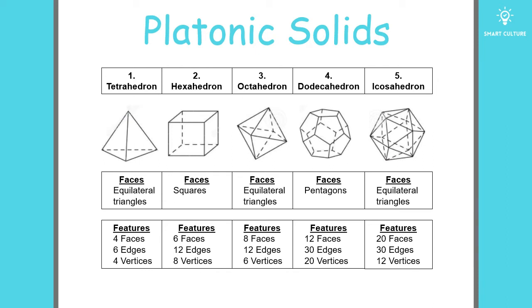Now let's take a look at this table. First, we'll look at a tetrahedron. As you can see, the faces are all equilateral triangles. Let's take a look at the features. A tetrahedron has four faces, six edges, and four vertices.